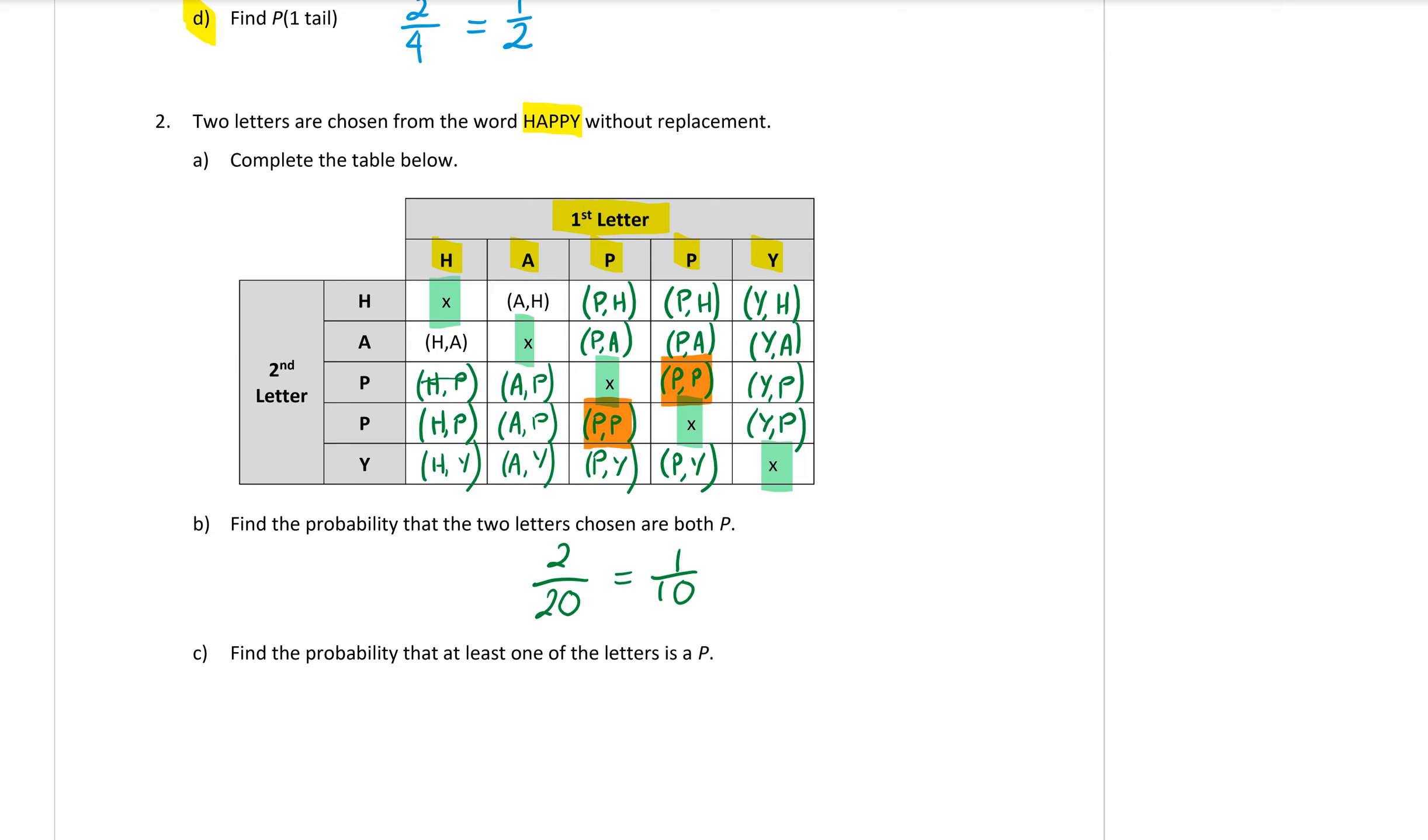So let me get my highlighter back, that one, that one, all these ones with P's in them. Lots of them. So all those ones highlighted in orange have at least one P, and there's two of them that has two P's.